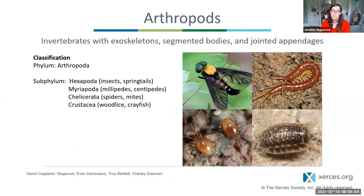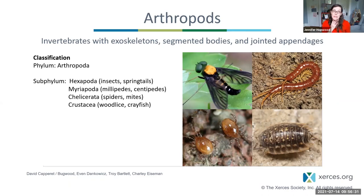From here on out we're moving into arthropods — invertebrates with exoskeletons, a hardened cover outside their body, plus segments and jointed appendages. The four main groups of arthropods include the hexapoda (insects and springtails), the myriapoda (centipedes and millipedes), chelicerata (mites and spiders), and crustacea, which include terrestrial species like wood lice and crayfish, though the majority of crustaceans are found in aquatic habitats.